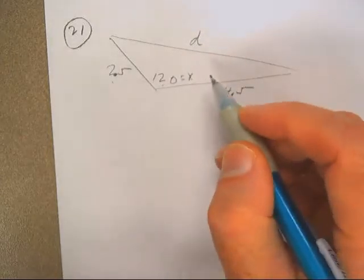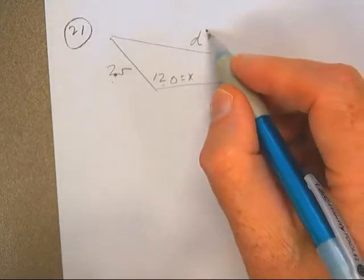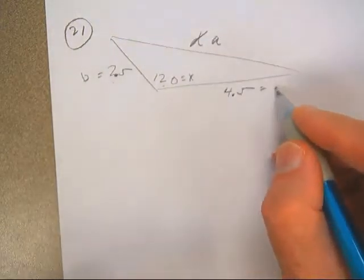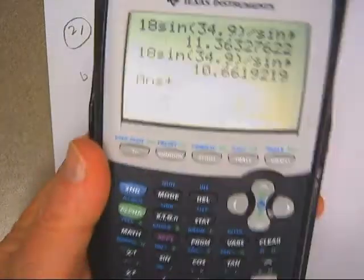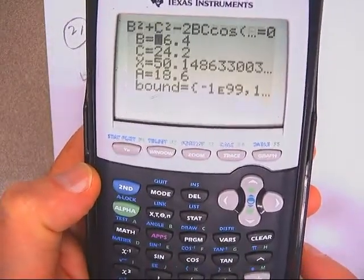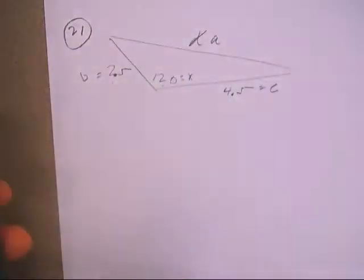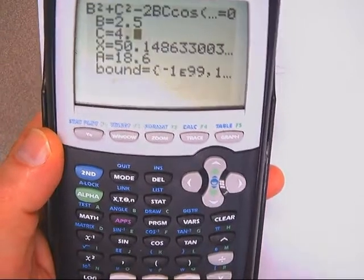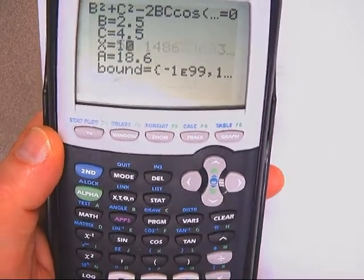So I'm going to let this be x. I'm going to let that one become a, and these are going to be b and c. And I just go straight to math, the equation solver or math zero. Put in b is two and a half, put in a is four and a half, put in the angle is 120.